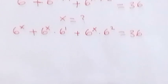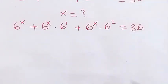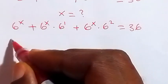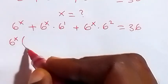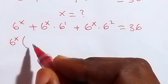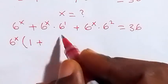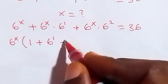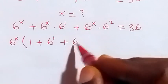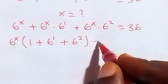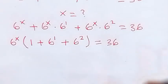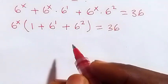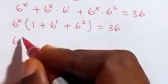From here we have 6 to the power of x common, so we can take it out. This will be 6 raised to power x multiplied by what will be left: 1, then plus what is left here is 6 raised to power 1, plus what is left here 6 raised to power 2, then equals to 36. In the next step we simplify the bracket and we have 6 raised to power x.